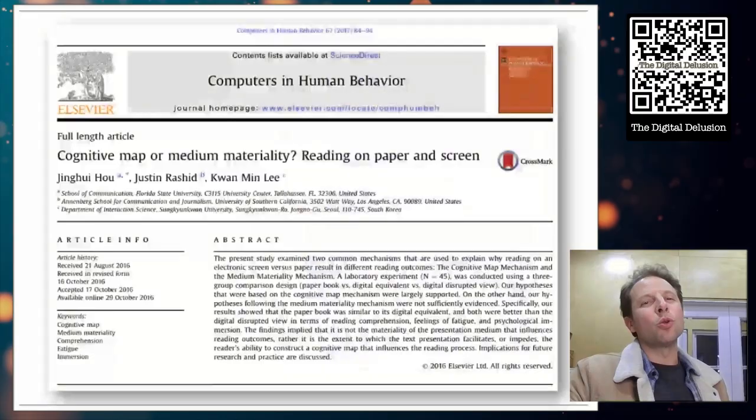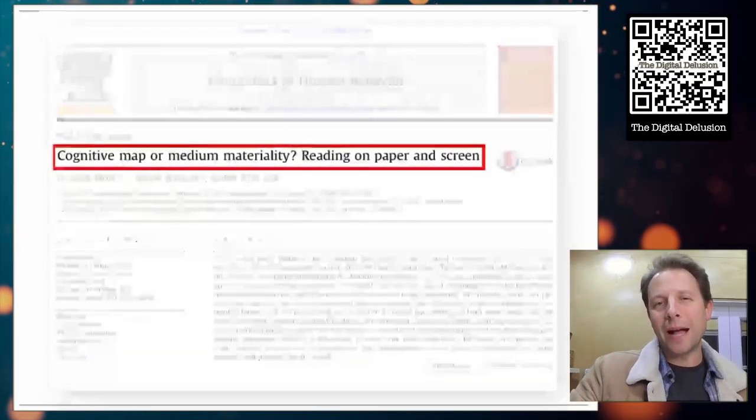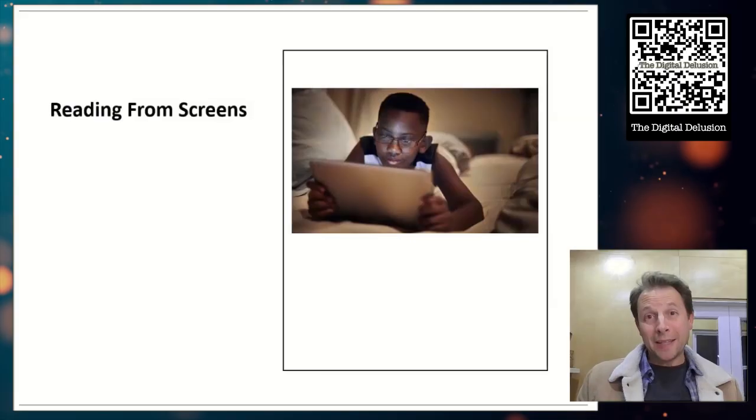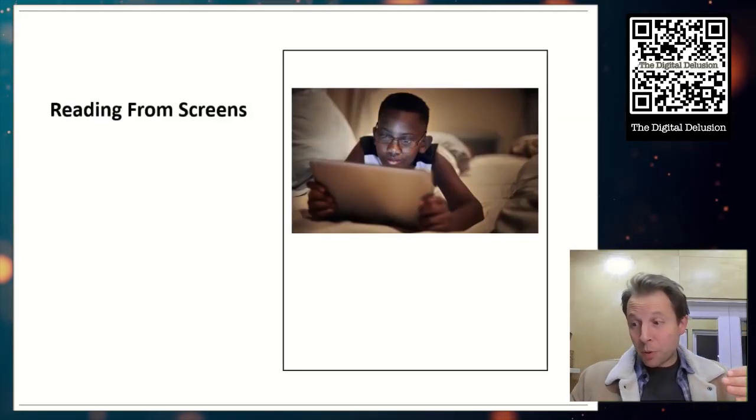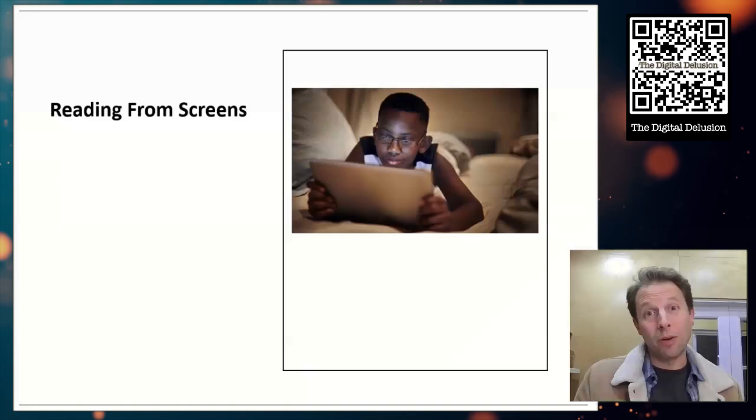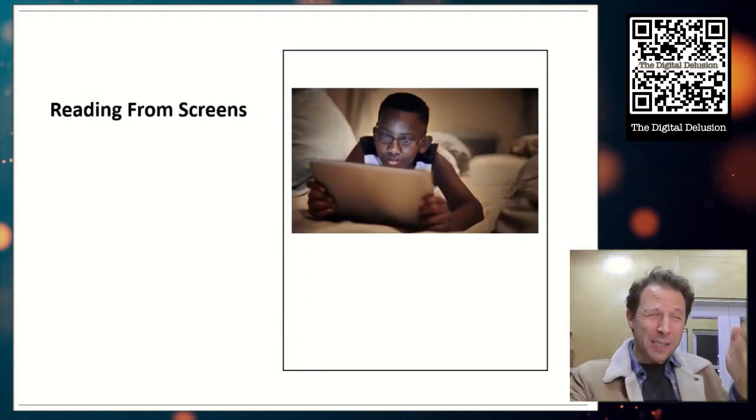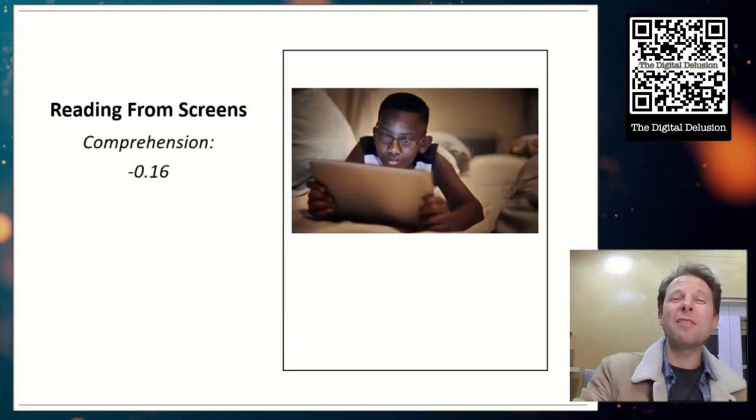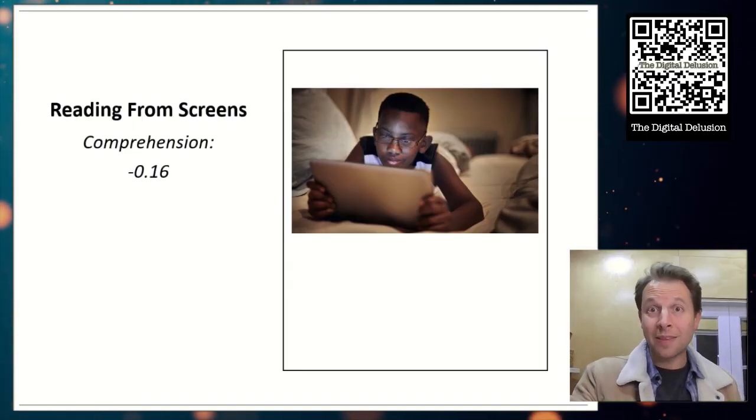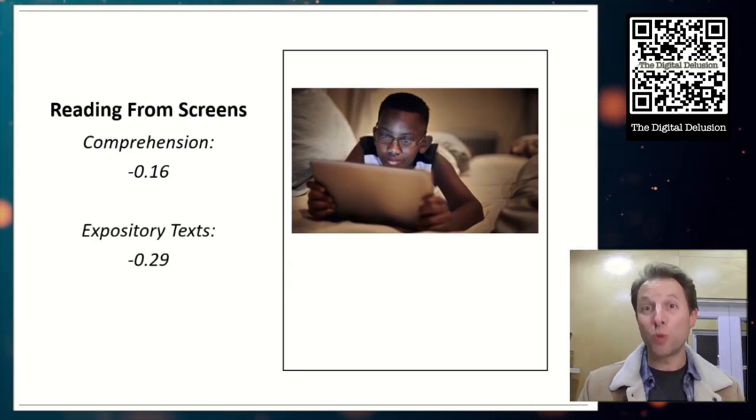And the article I've selected this week is called Cognitive Map or Medium Materiality, Reading on Paper and Screen. Now, we've known for decades that when people read from screens as opposed to paper, learning, understanding, comprehension go down. And how bad is it? The effect size of screens compared to paper is about negative 0.16. But realistically, if we just look at expository text, that effect drops to negative 0.29.